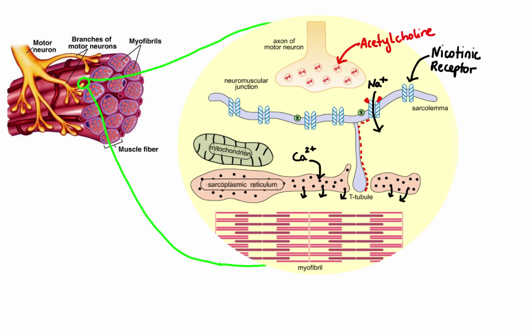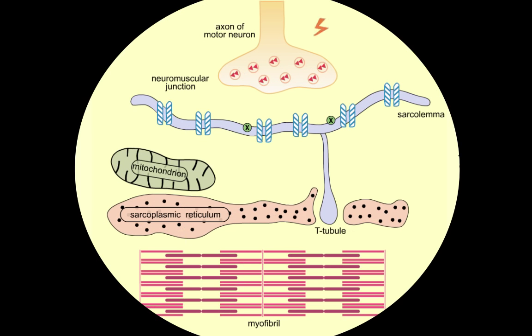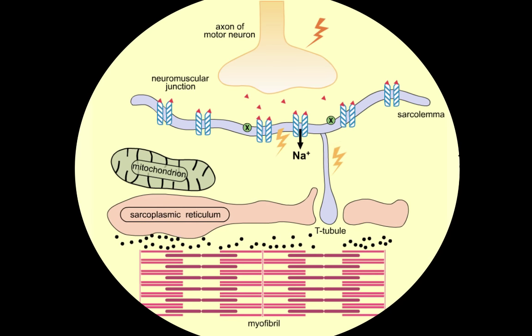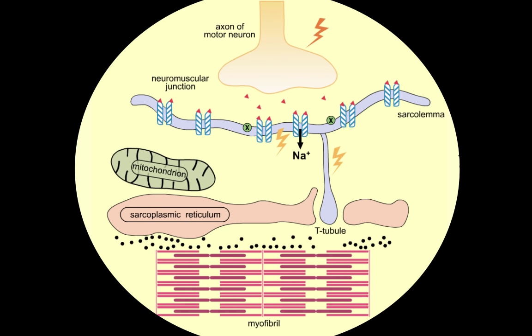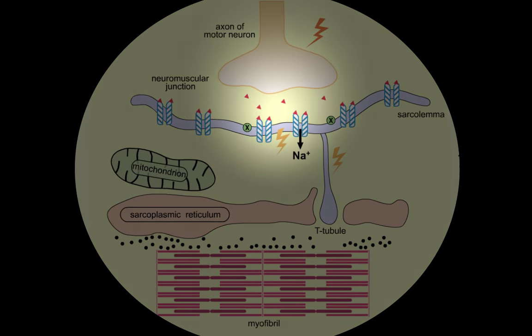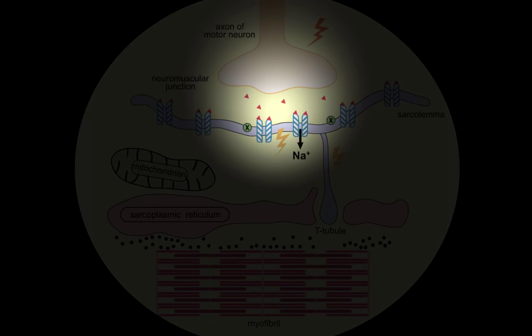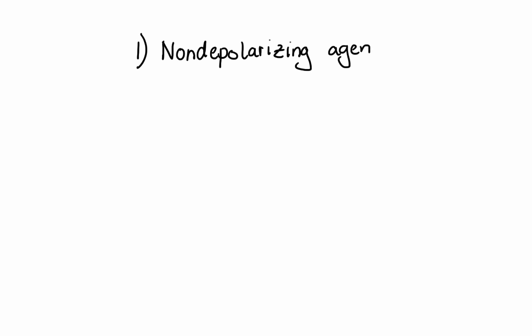To summarize the steps: an action potential causes release of acetylcholine, channels open, sodium goes in, triggering another action potential, calcium gets released, and the muscle contracts. Neuromuscular blocking agents work at this junction by interacting with nicotinic acetylcholine receptors. These agents can be divided into two groups: non-depolarizing agents and depolarizing agents.